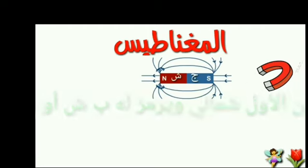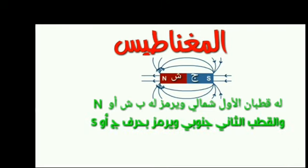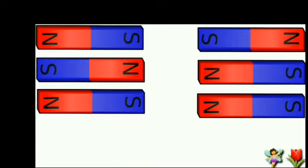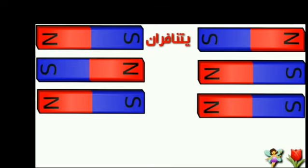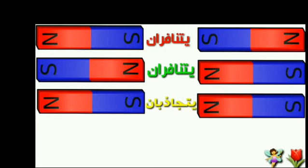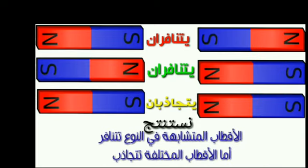A magnet has two poles: the first is the North pole, symbolized by N, and the second is the South pole, symbolized by S. The attractive force is greatest at the two poles and decreases toward the middle. If we bring two positive (like) poles together, do they attract or repel? Excellent — they repel. If we bring two north poles together, they also repel. But if we bring opposite poles together, they attract. We conclude: like poles repel and unlike poles attract.